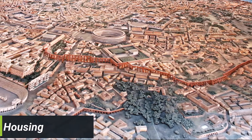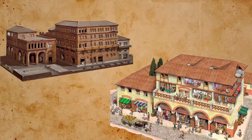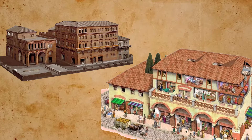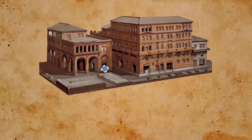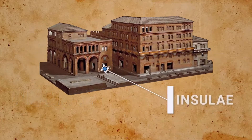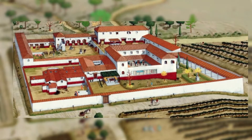This kept people from being cheated when doing business. There were two main types of housing in the cities. The poor and middle-class people lived in large apartment buildings called Insulae. The majority of the people lived in Insulae, while the wealthy lived in private homes.